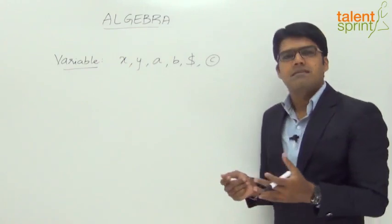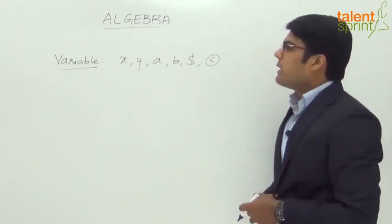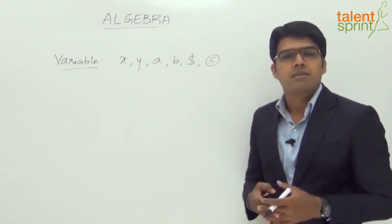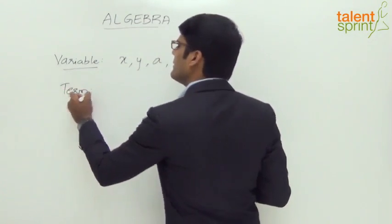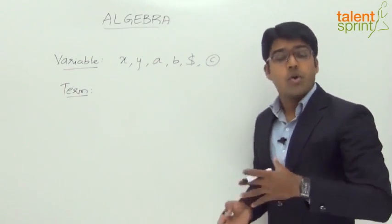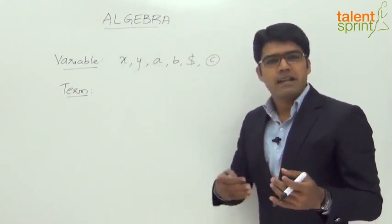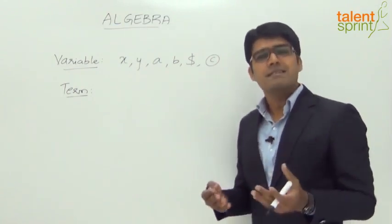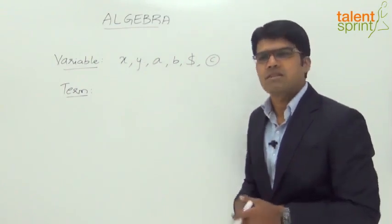A variable is nothing but a symbol used to represent a number. Now what is meant by a term? A term is nothing but a variable, or it can be some number, or a combination of both variables and numbers. We generally use this word 'term' when we discuss equations or expressions — the first term, second term, or the number of terms. So a term is a variable, a number, or a combination of variables and numbers.